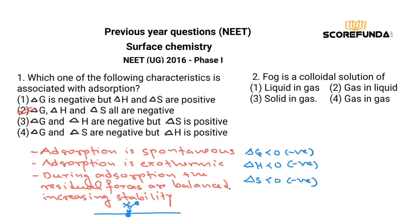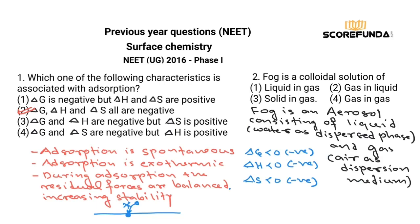NEET 2016 Phase 1, second question: fog is a colloidal solution of what? Fog is an aerosol where the disperse phase is liquid and the dispersion medium is gas. So fog is a colloidal solution of liquid dispersed in gas.